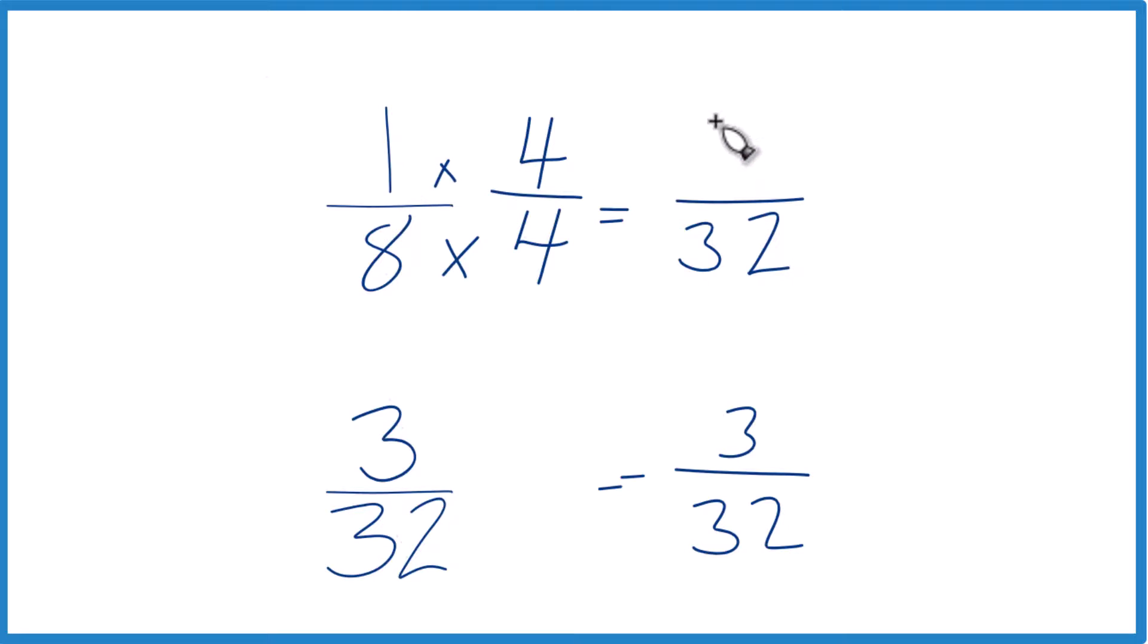1 times 4, that's 4. And 4 32nds is an equivalent fraction to 1 eighth.